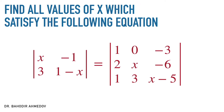On the left-hand side, I've got the determinant of a 2x2 matrix. On the right-hand side, I've got a 3x3 matrix. So we have to find them, equalize them, and find all the values of x which would satisfy this equation.